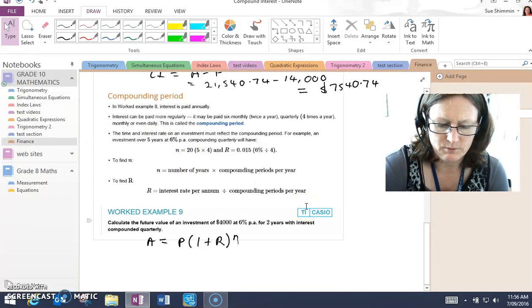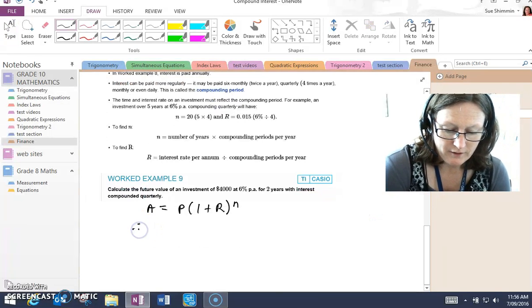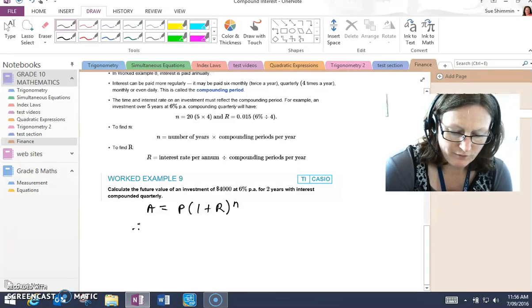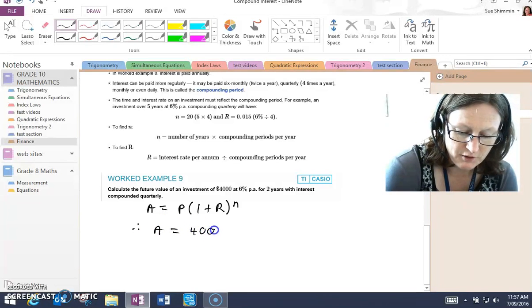I'll explain it with this worked example. We are trying to work out the future value of a $4,000 investment. The principal is $4,000.